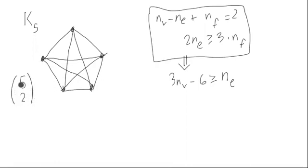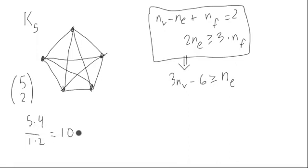The number of edges can be counted by a binomial coefficient, 5 choose 2, which is 5 times 4 over 1 times 2, which is 10. So there are 10 different edges, and we know that there are five different vertices.